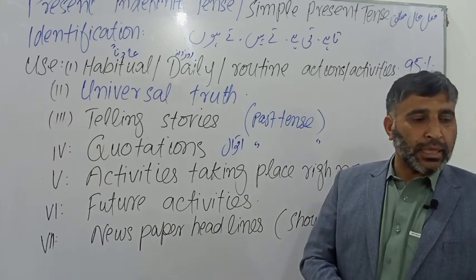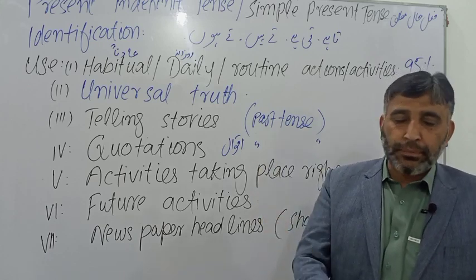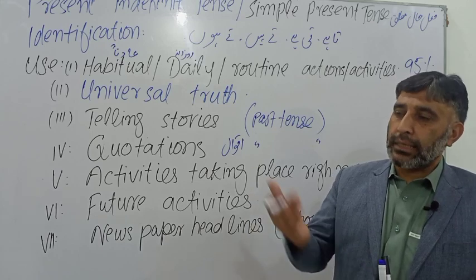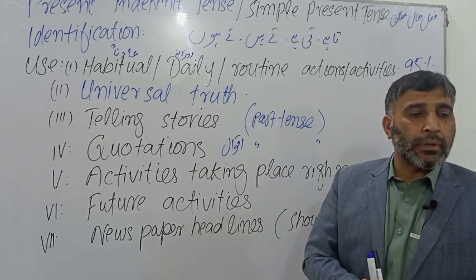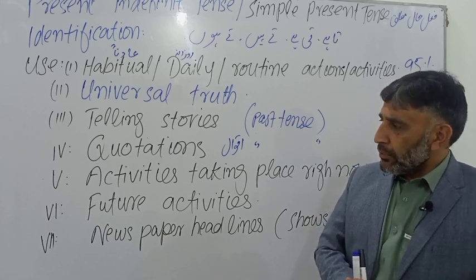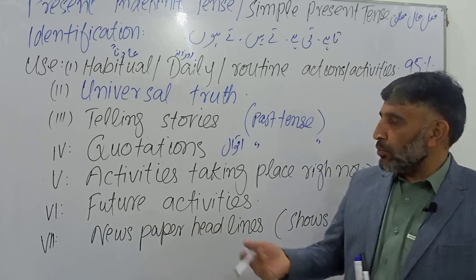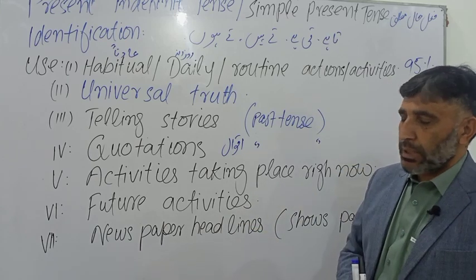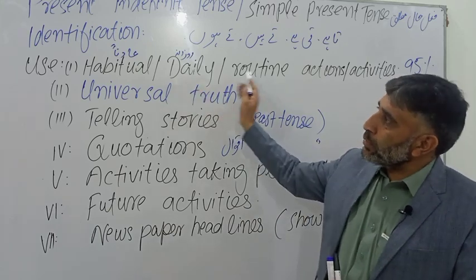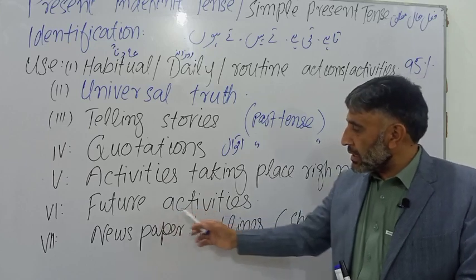The fifth use is for activities taking place right now. For example: 'Here comes Bilal' — 'Bilal yahan aata hai'. 'Look how beautifully it rains' — 'dekho kitna acha barish barasta hai'. Normally we would say 'it's raining', but sometimes we use present indefinite for present activities too — not always, but occasionally.